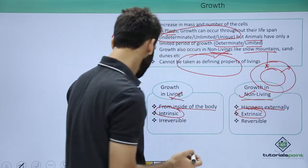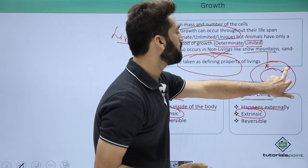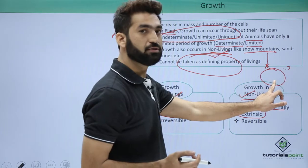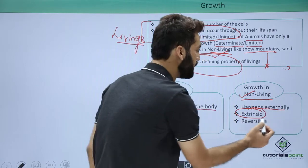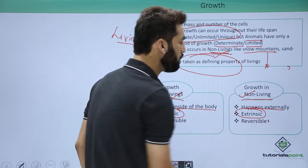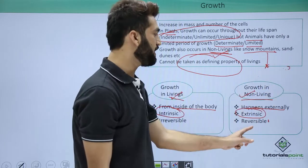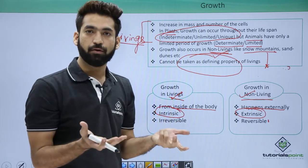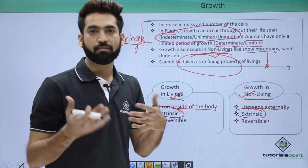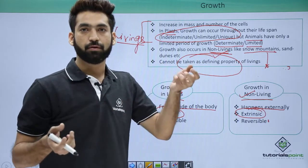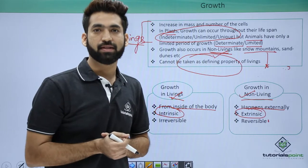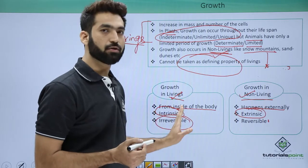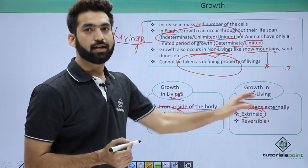One more difference: when the mountain grows to a large size, it can come back to its original size. So growth in non-living things is reversible — they can return to their original shape and size. But in living organisms, we grow from age four to fourteen to twenty-four and beyond; we cannot go back to our original shape and size. So growth in living organisms is irreversible.